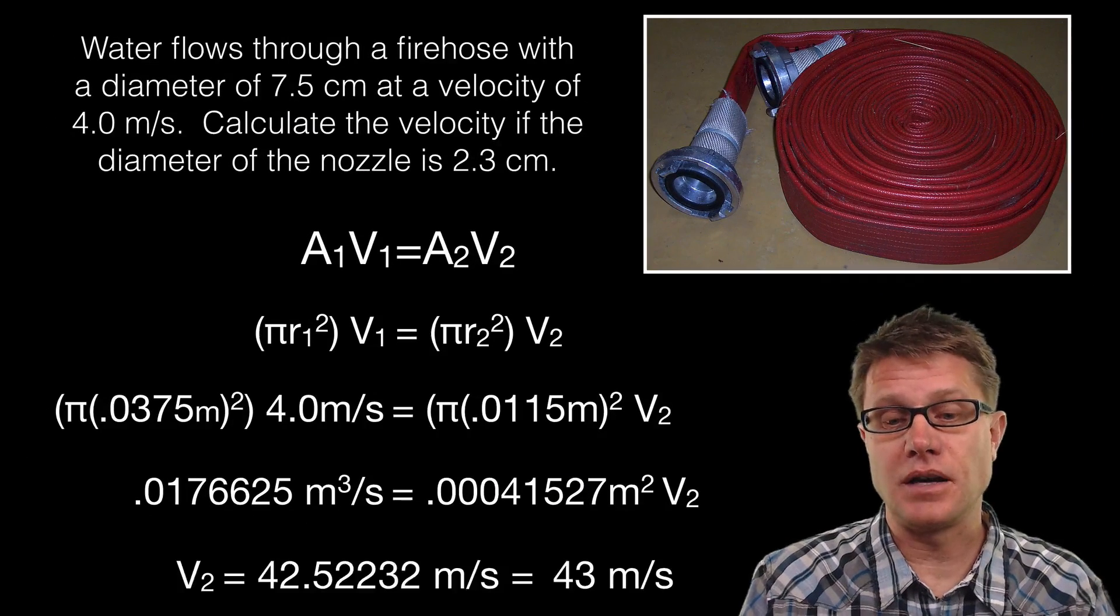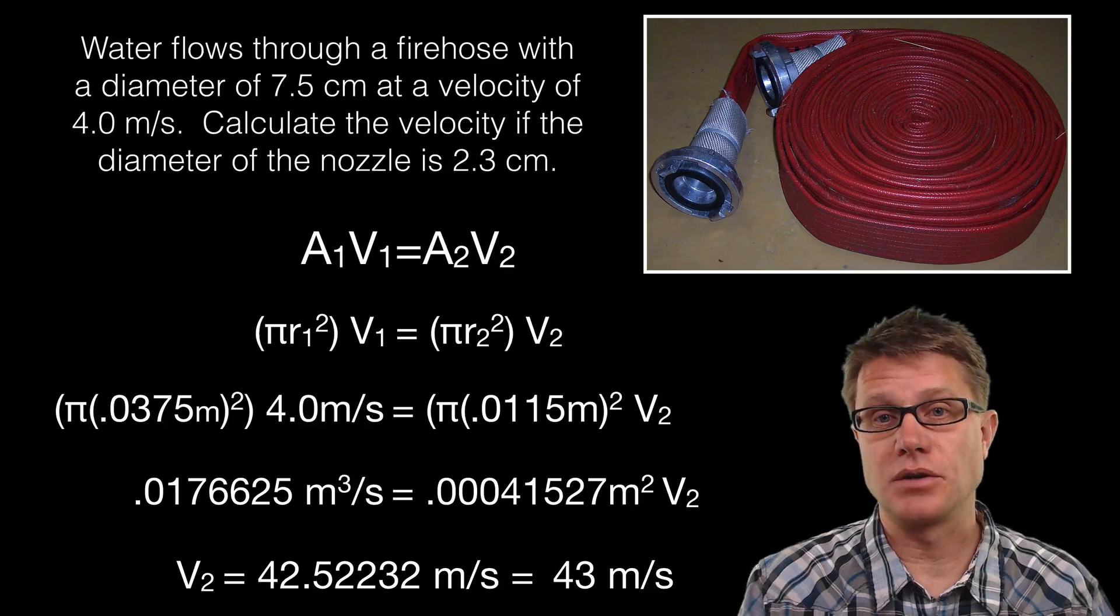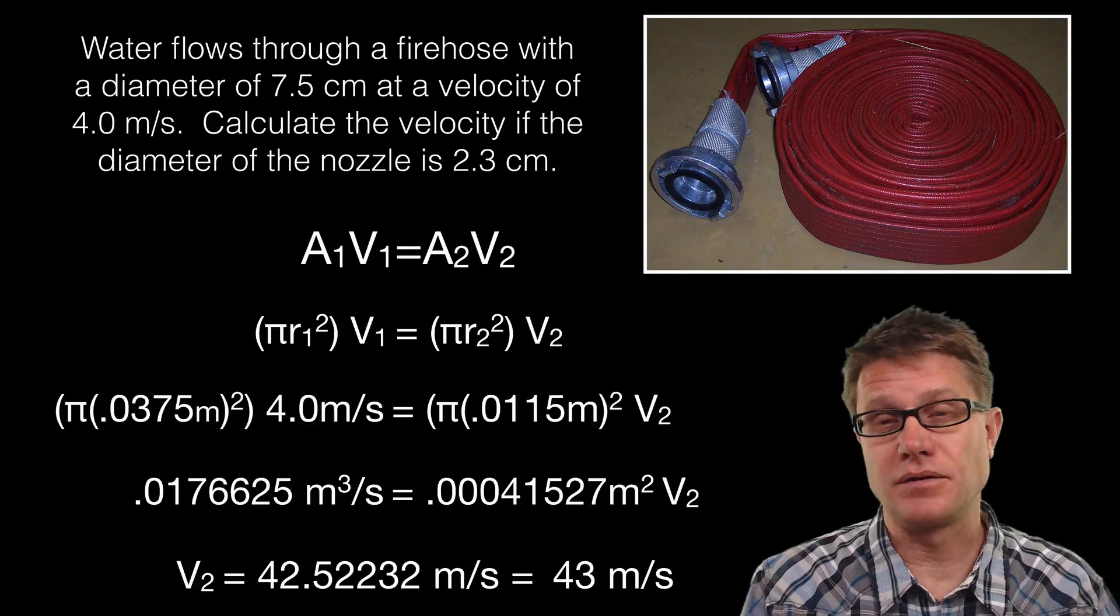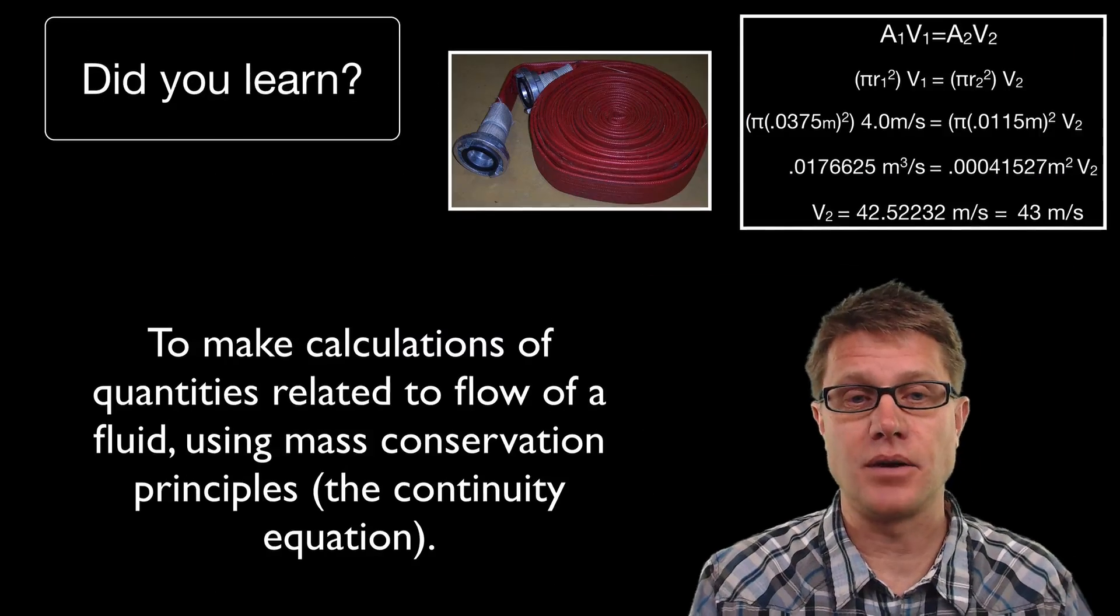And so I solve it and I get a velocity 2 of around 43 meters per second. And so it is going 4 meters per second, around 10 miles an hour in the hose, but it is coming out around 100 miles an hour.